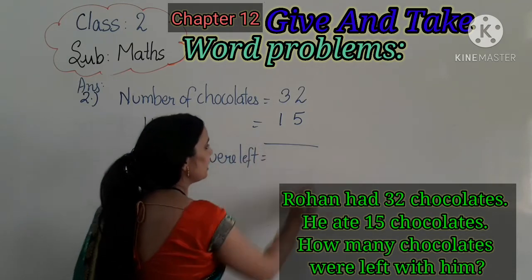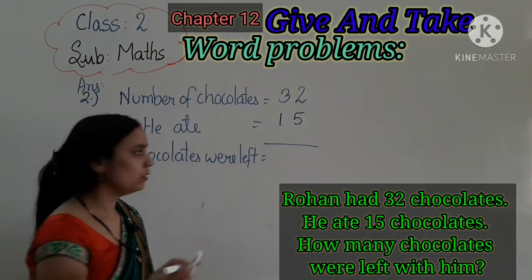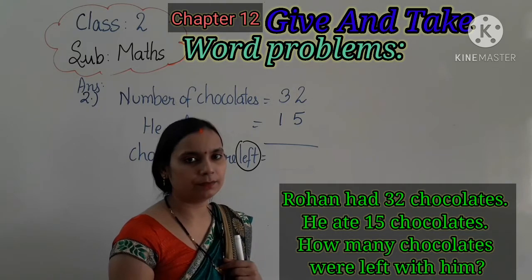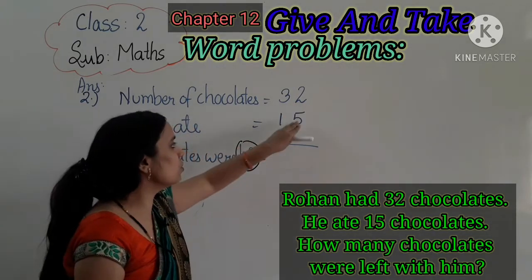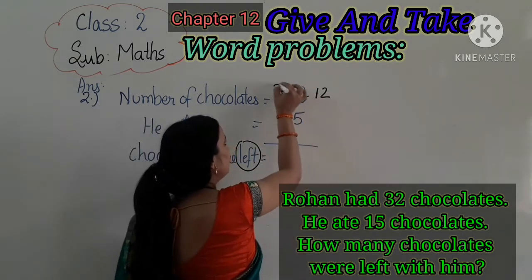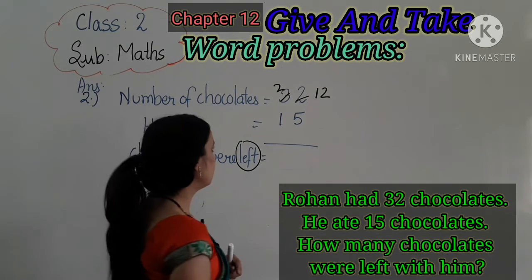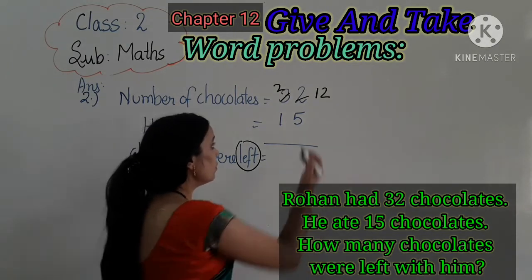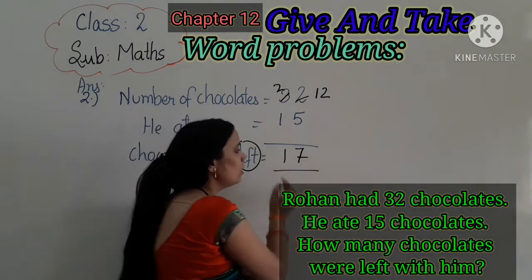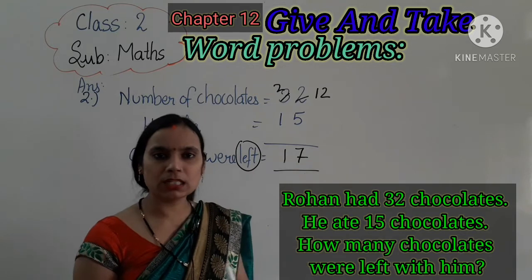याद रखना — total निकालने के लिए हम add करते हैं, और left निकालने के लिए subtract करते हैं. So, 32 minus 15: 2 में से 5 नहीं जाता, so we borrow to make 12. 12 minus 5 is 7, and 2 minus 1 is 1. So Rohan के पास अब 17 चोकलेट बची हैं.